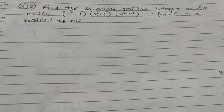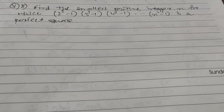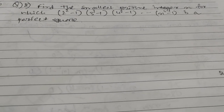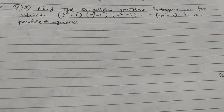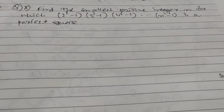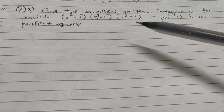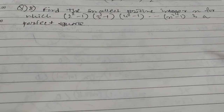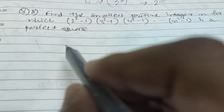Hi friends and students. This is question number 8 for the number properties playlist. The question is: find the smallest positive integer n for which (2²-1)(3²-1)(4²-1)...( n²-1) is a perfect square.